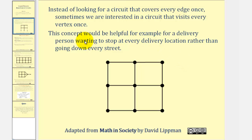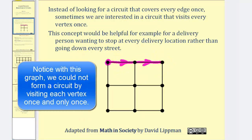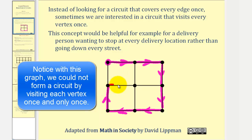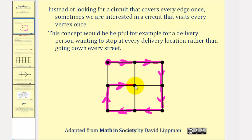For example, the delivery person again might start here, go in this direction, turn and go in this direction, turn and go in this direction, turn and go in this direction, and turn again here. So the delivery person would start here and end here. And again, notice how this is not a circuit — it is a path, but it does visit each vertex exactly one time.